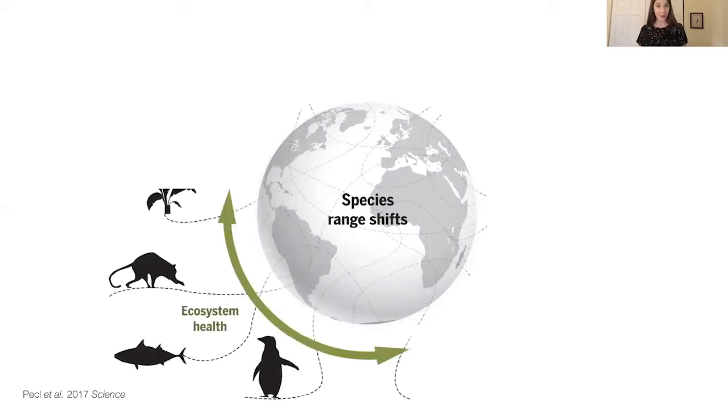Some species might benefit from climate-related range shifts if new habitat opens up that wasn't previously available to them. But many others will be harmed as their historic habitats become too warm, and they might struggle to spread into new ones. These species-level effects can cascade up to communities and entire ecosystems.